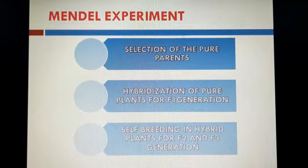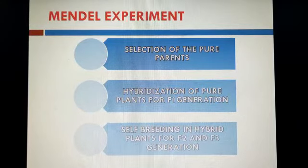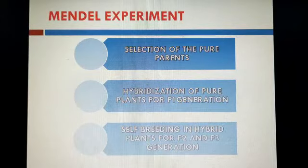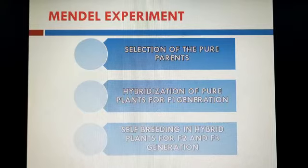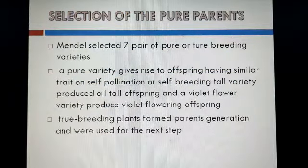Today we are going to continue with the topic of Mendel's experiment — how he conducted the experiment. I will explain it in three steps. The first is selection of pure parents; the second is hybridization of pure plants to get the F1 generation; and the third is self-breeding in hybrid plants for F2 and F3 generations.